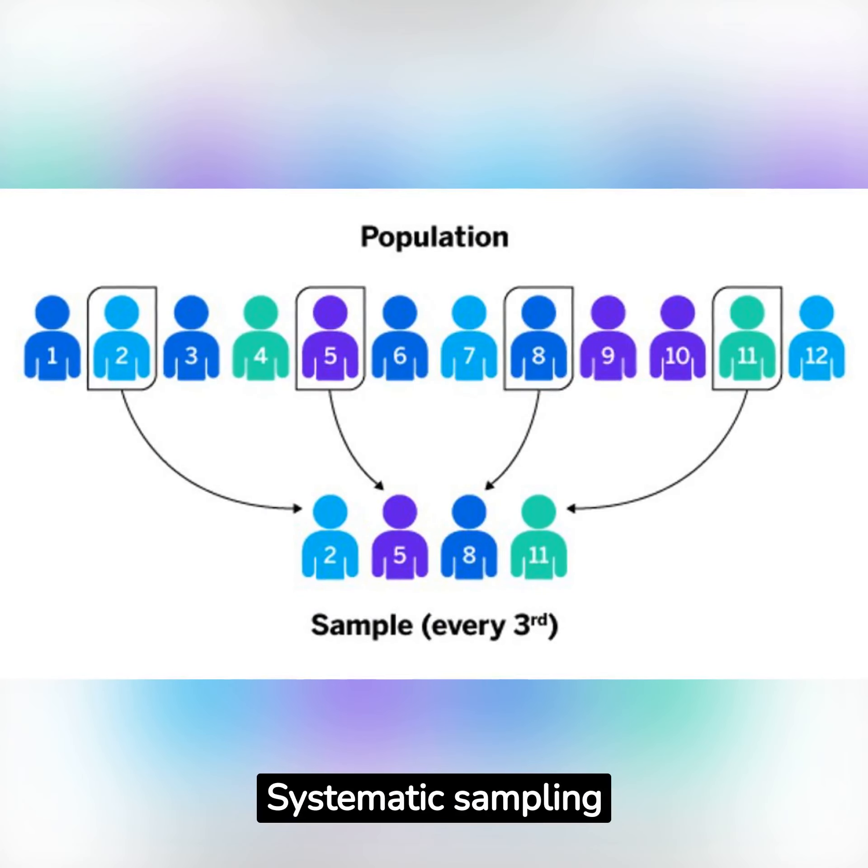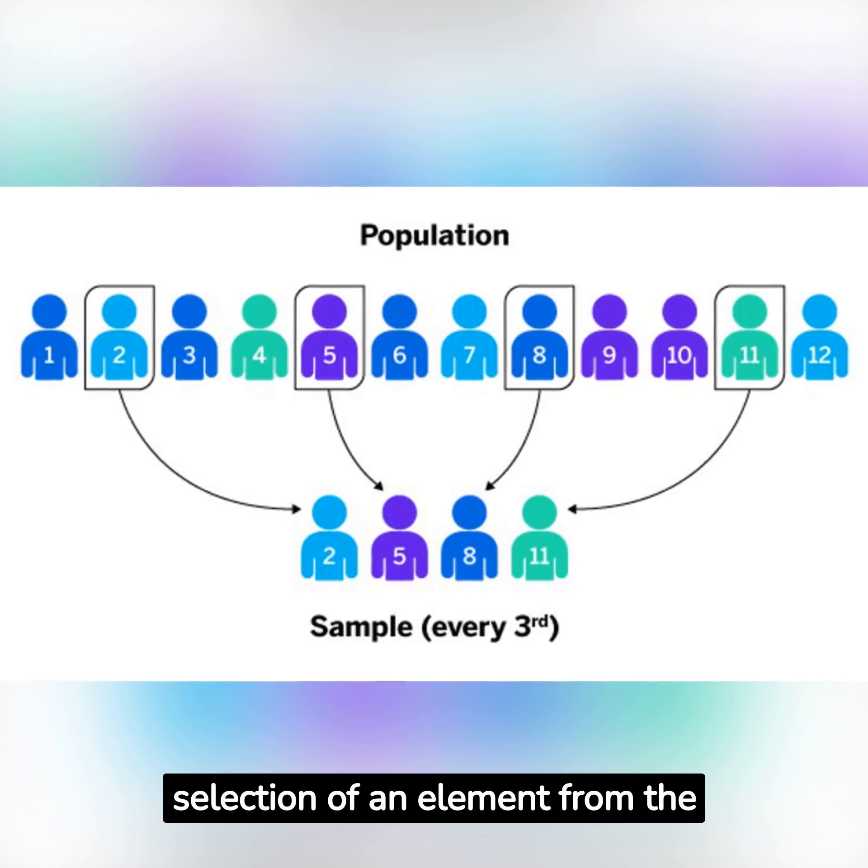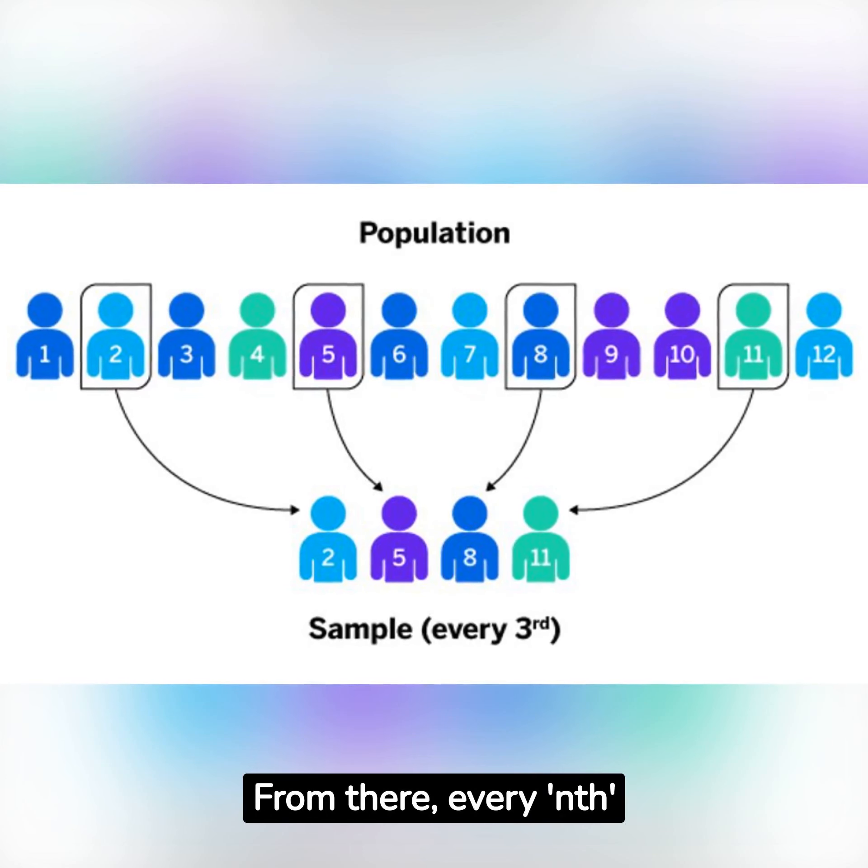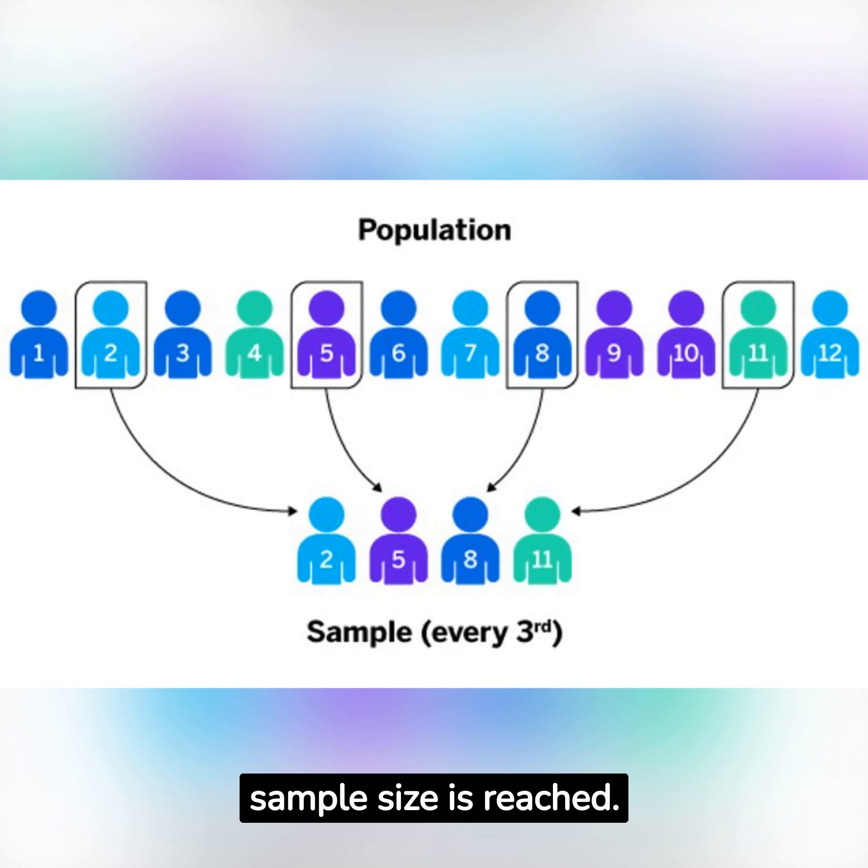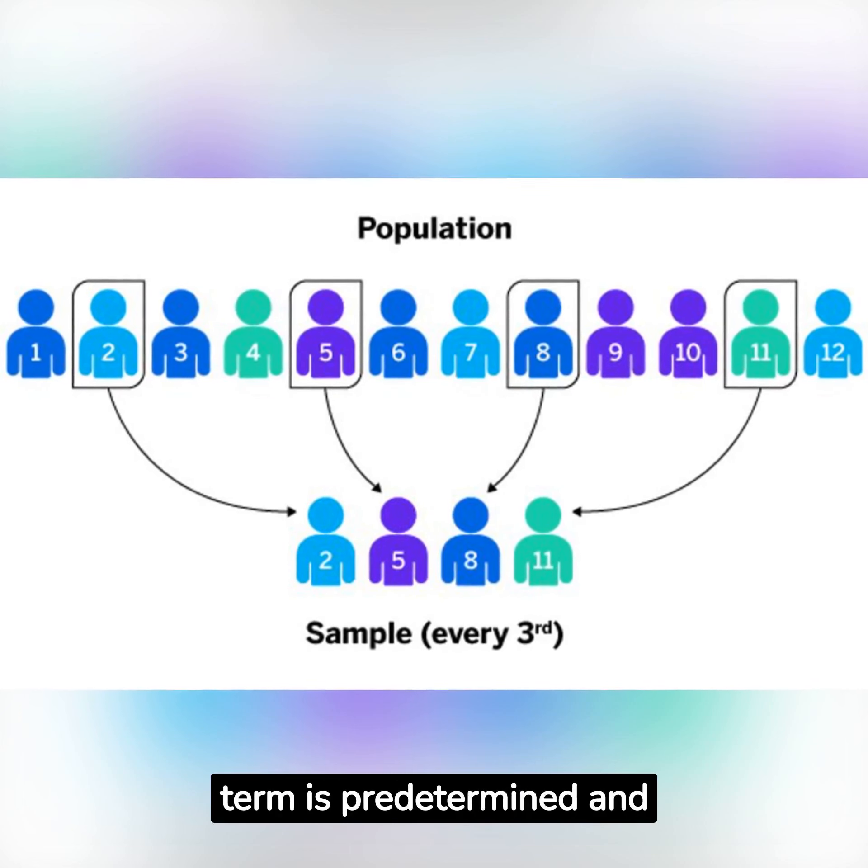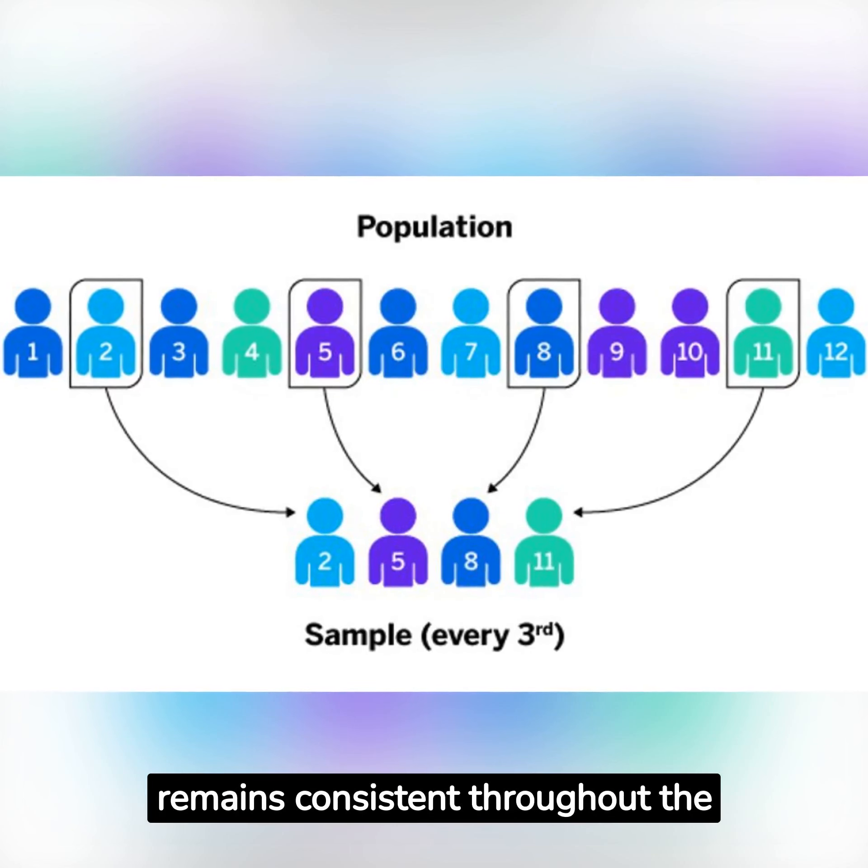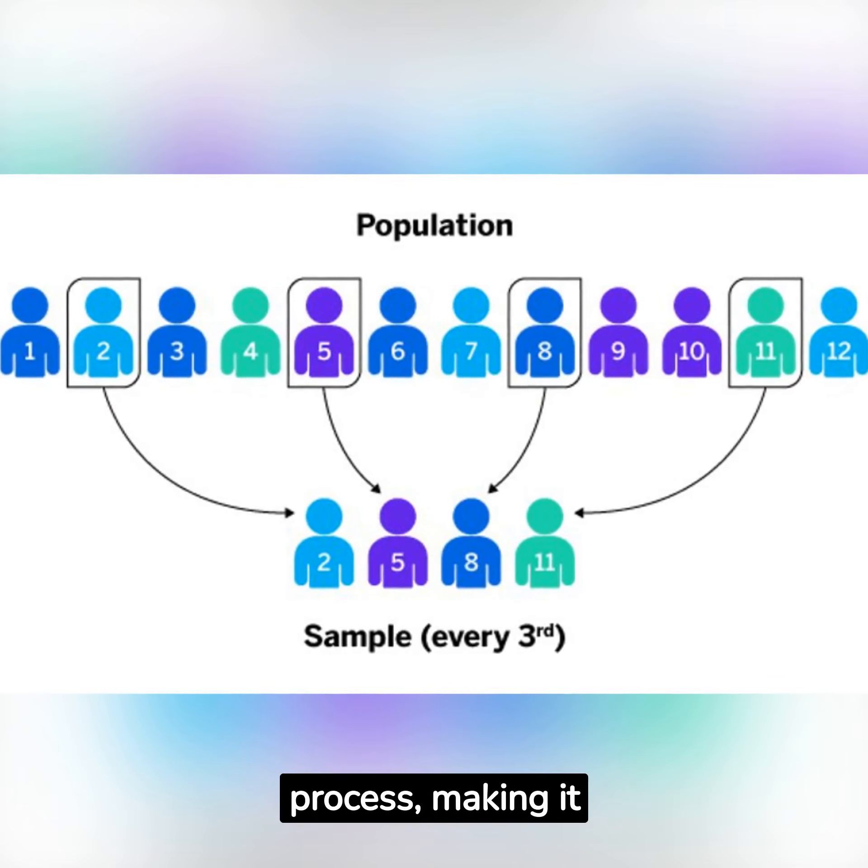Systematic Sampling begins with the random selection of an element from the population. From there, every n-th term is chosen until the sample size is reached. This n-th term is predetermined and remains consistent throughout the process, making it extremely straightforward.